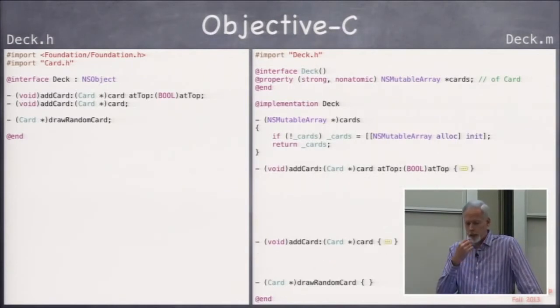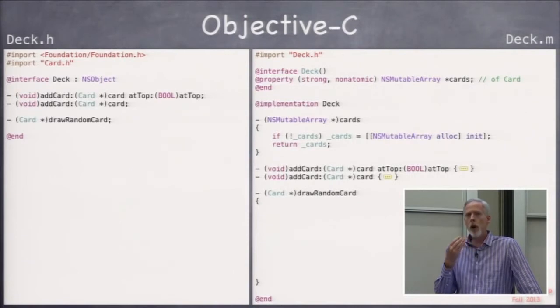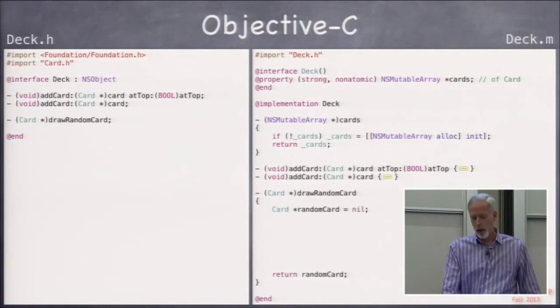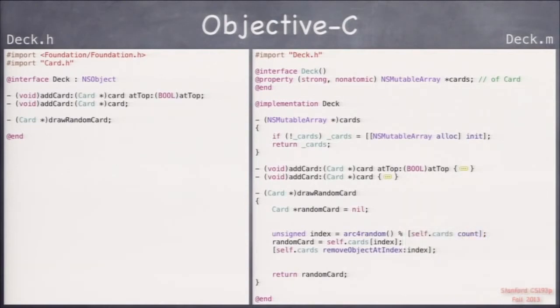Let's look at draw a random card. All it wants to do is get a random card out of self.cards. The code is very simple. We get a random integer using arc4random, which is a C library function. That percent after it means mod, integer modulo. Then self.cards.count is the number of cards in our self.cards. We're just going to get a random index into self.cards.